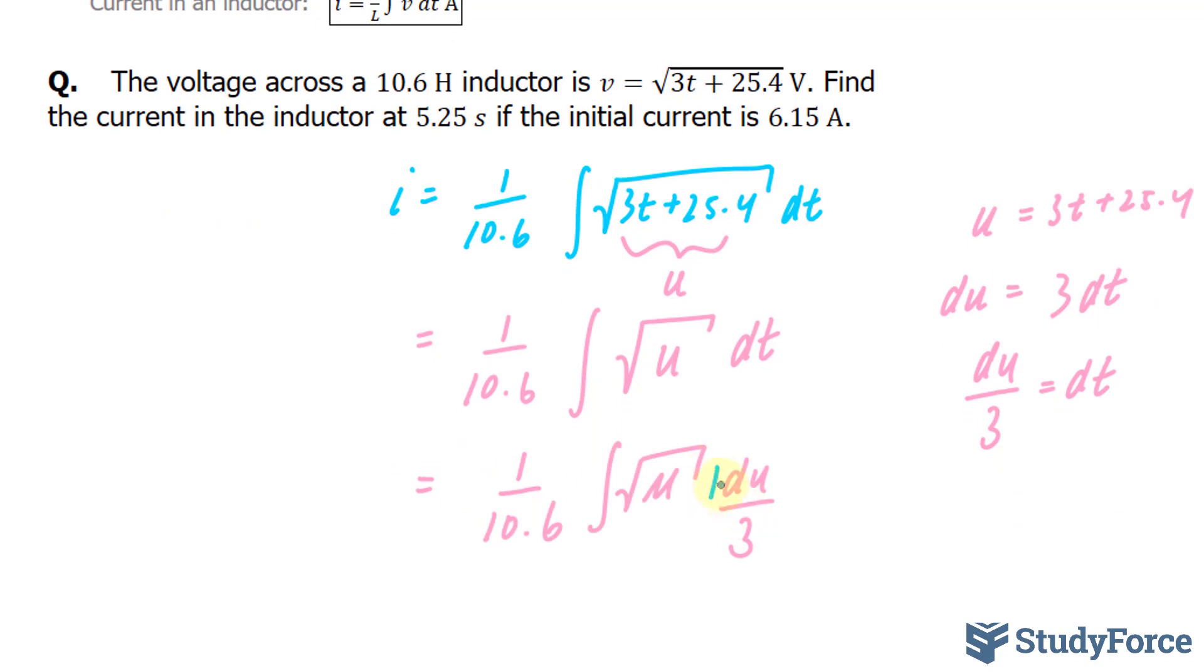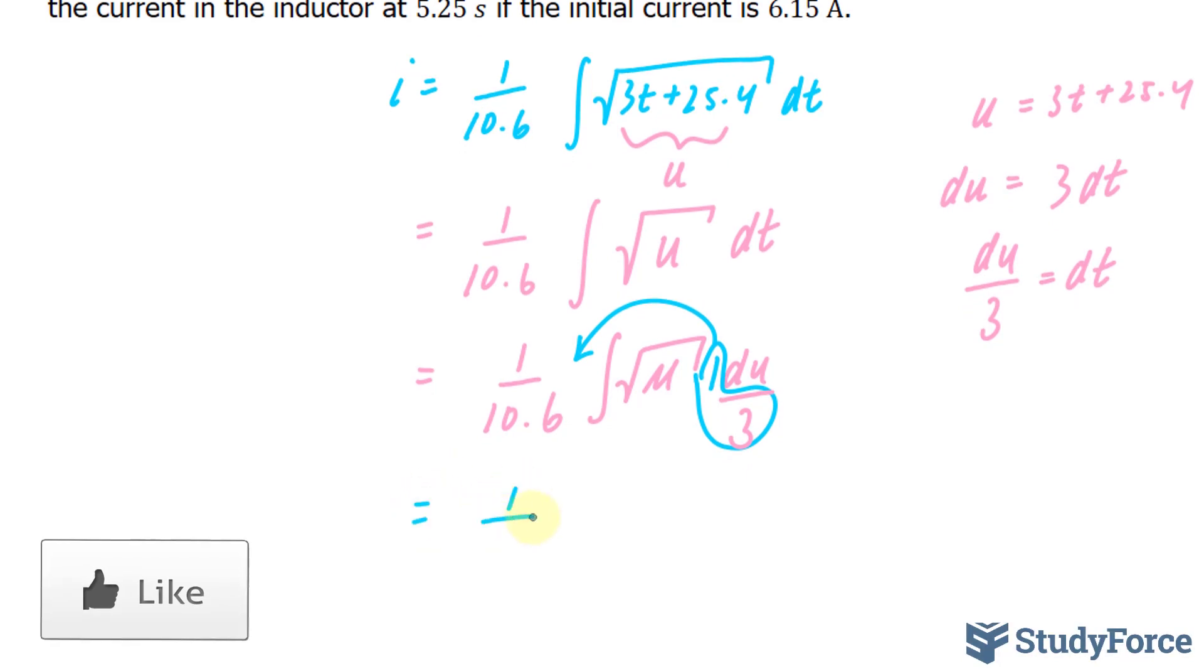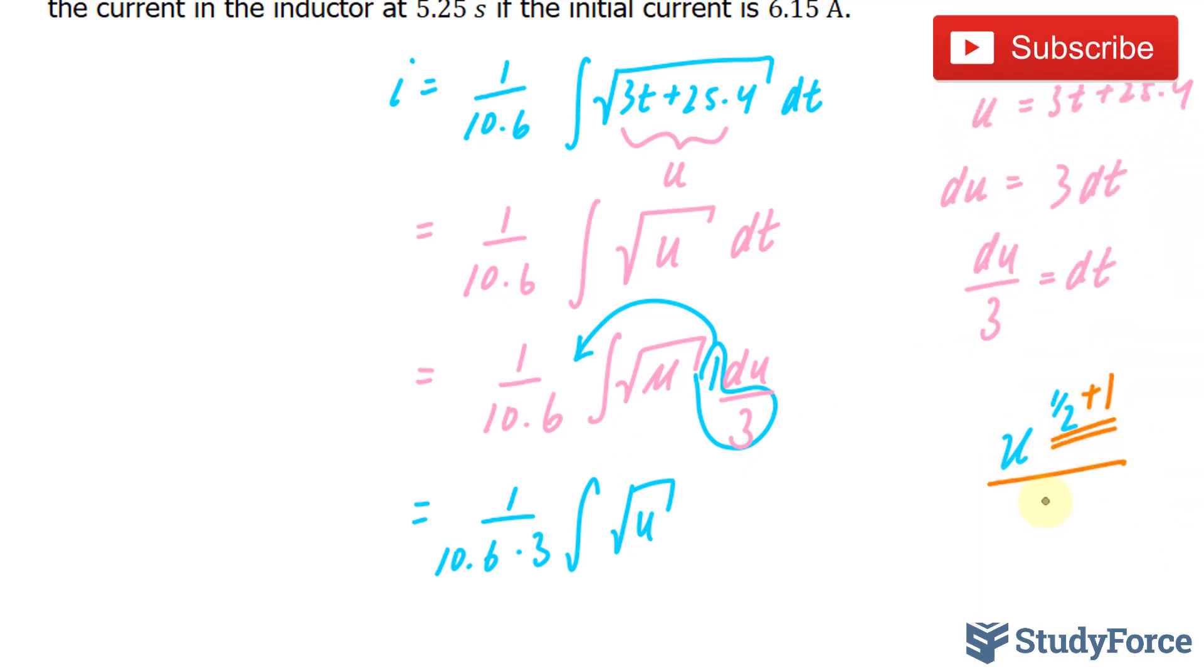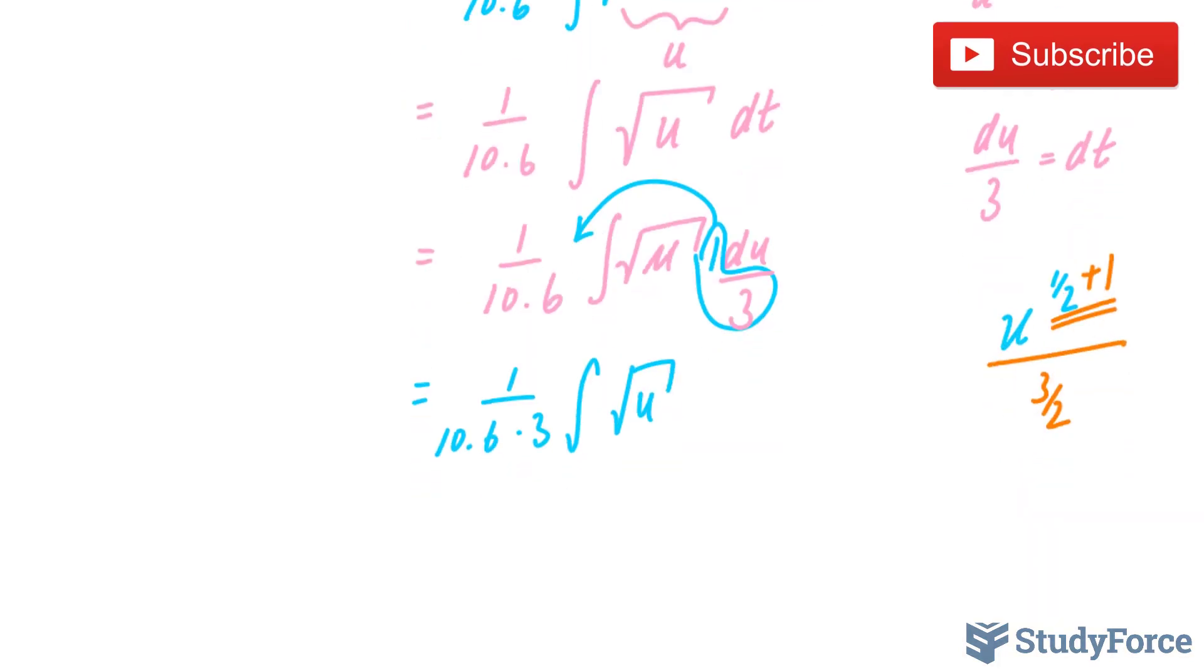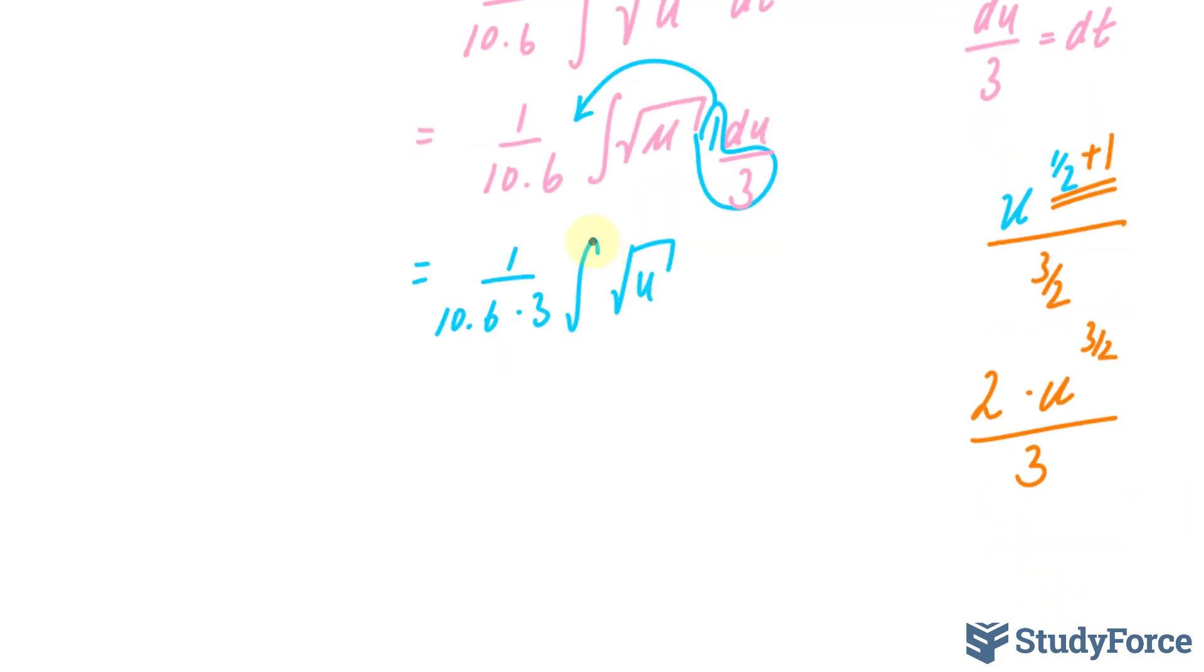Now I'll take this 1 over 3 outside of the integral, making it easier for us to integrate, giving me 1 over 10.6 times 3 times the integral of the square root of u. I'll switch this term with u to the power of half, and it means the same thing mathematically. And from there I can add 1, take the sum of this, which is 3 over 2, and divide this term by 3 over 2. Half plus 1 is 1.5, and that's represented by 3 over 2. Rearranging all this, I end up with u times 2 to the power of 3 over 2 over 3. I just found the integral, I don't need this symbol anymore.